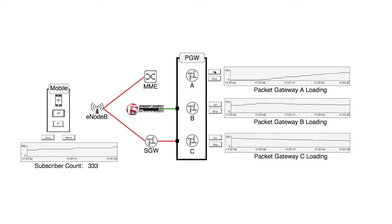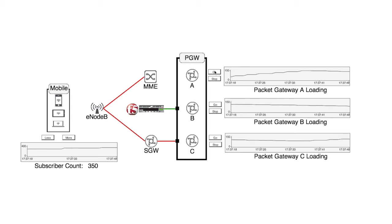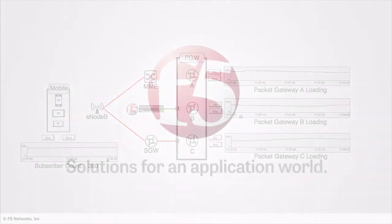Since the gateway has no traffic, BigIP will now distribute load to this gateway until it stabilizes, relieving load from the other two gateways. As can be seen through the implementation of F5 Intelligent DNS for EPC, service providers are able to better service their customers through enhanced availability and network optimization.